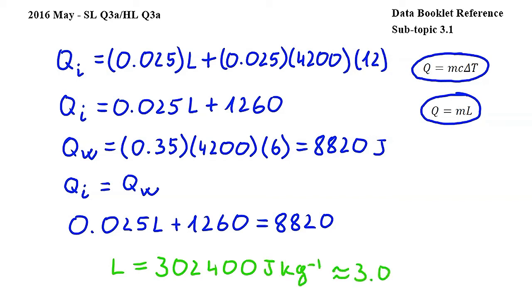or 3.02 times 10 to the power of 5 joules per kilogram. You can give either one of these values as your final answer for the specific latent heat of fusion of ice.